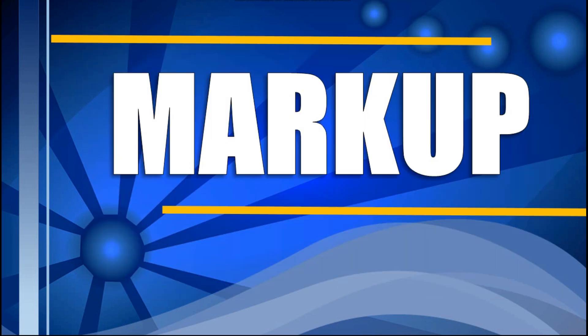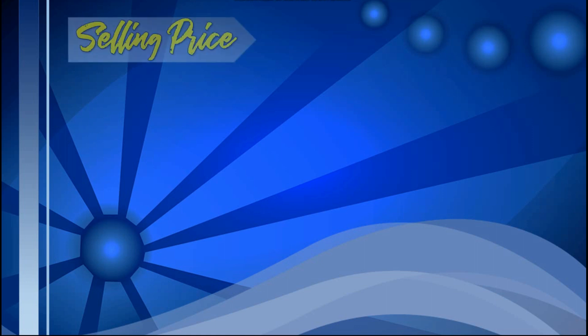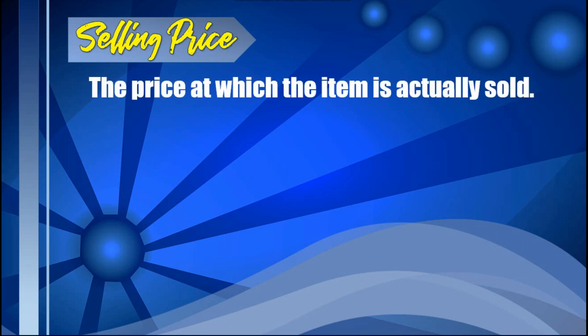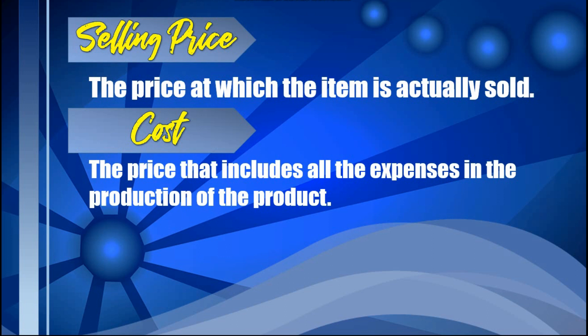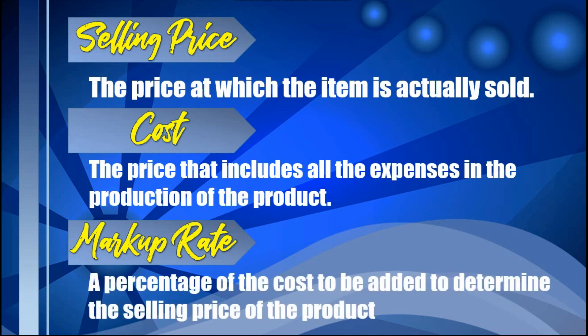First, let us define markup. It is the amount of money added to the cost to cover the operating expenses and provide a profit to the business. Here are the other terms to take note. First, selling price — it is the price at which the item is actually sold. Next, cost — it refers to the price that includes all the expenses in the production of the product. And last, we have the markup rate — it is the percentage of the cost to be added to determine the selling price of the product.